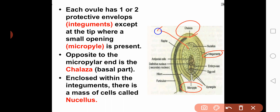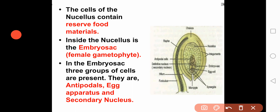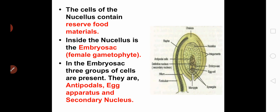Next to the integuments, the ovule contains nucellus. The cells of the nucellus contain reserve food material. Inside the nucellus there is an embryo sac, which is also called the female gametophyte, because it bears female gametes. Within the female gametophyte — the embryo sac — three groups of cells are present: antipodals, egg apparatus, and the secondary nucleus.